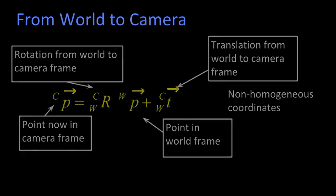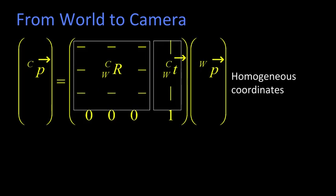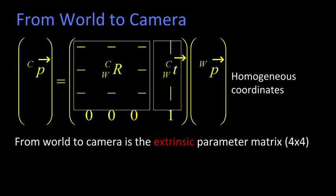In homogeneous coordinates, it's just expressed like this. The top left three by three is the rotation. The right hand column is the translation. And that whole four by four is referred to as the extrinsic parameter matrix. This is the thing that transforms a point in the world to a point in the camera frame.